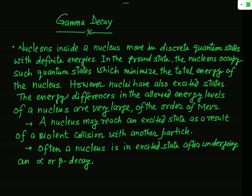In an atomic system, atoms are distributed in different energy levels or quantum states. Similarly, inside a nucleus, the nucleons move in discrete quantum states with definite energy. In the ground state, the nucleons occupy quantum states which minimize the total energy of the nucleus, so that state is called the ground state, where the energy of the nucleus is at its lowest value.